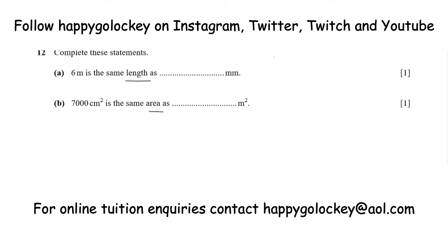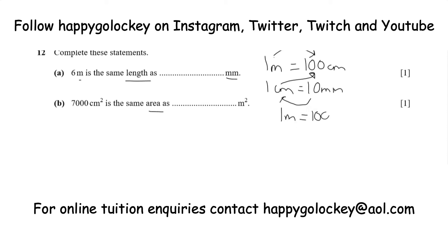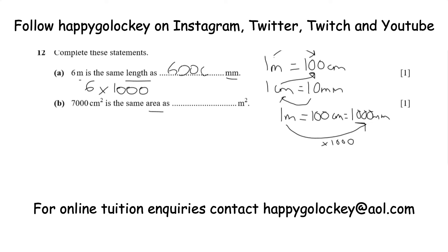We'll quickly go through length because we've got metres and millimetres, not centimetres, so let's be careful with that. 'Milli' means thousandth of, so 6 metres is 6,000 millimetres. 1 metre is 100 centimetres, which is 100 times 10 — 1,000 millimetres. So to get from metres to millimetres you multiply by 1,000, and to go back you divide by 1,000. So 6 metres multiplied by 1,000 equals 6,000 millimetres. That's the first part done.